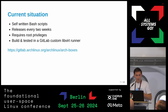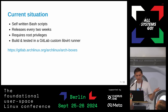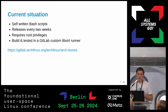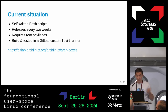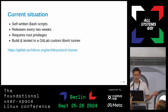The current situation is we have some nice bash scripts — they work, they're not that bad, they're pretty readable. But maybe we can do better. We release every two weeks, so this is all GitLab CI automated. Building requires root privileges, which is less ideal. This is all built and actually tested — we test boot stuff in GitLab CI with our own custom runner.